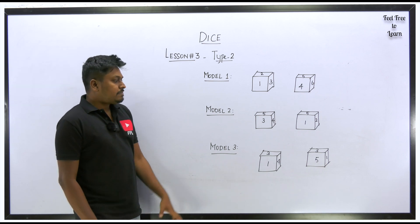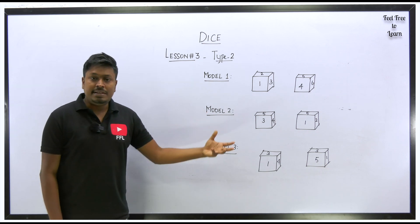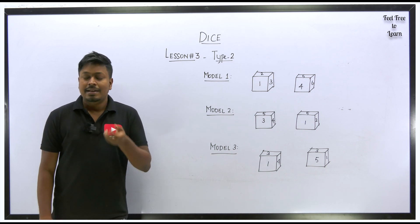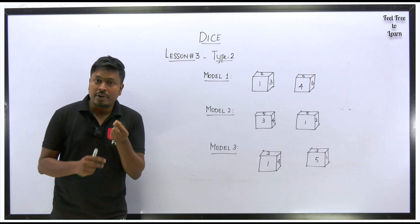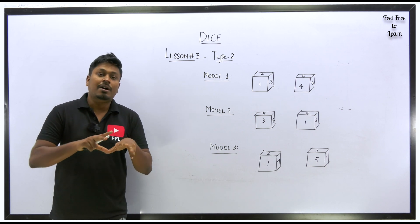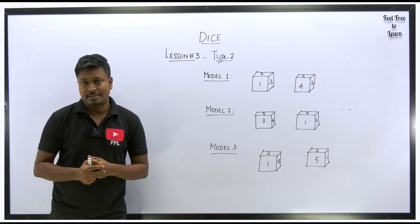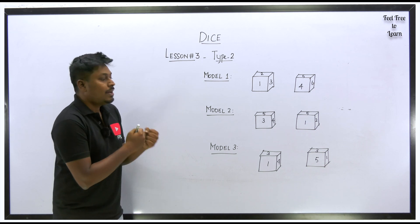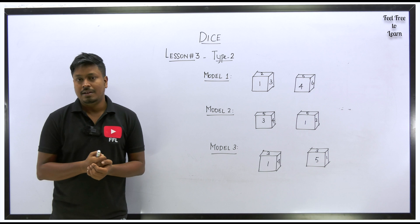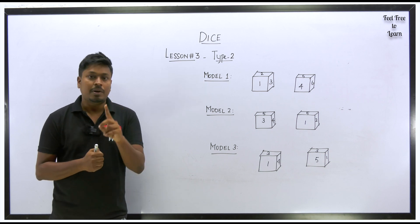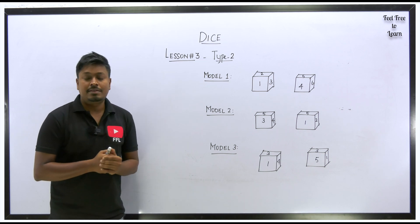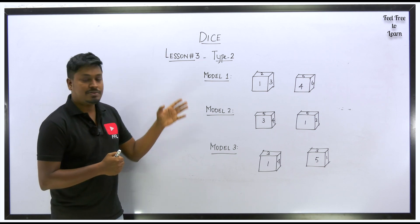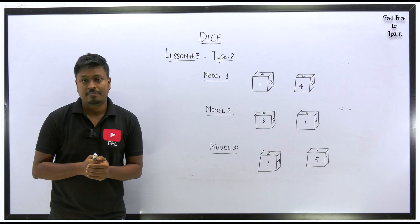I am going to solve all these questions by a normal method as well as by a shortcut technique. This shortcut is common for all the remaining lessons. If you learn it properly, you can apply it across all dice questions. So now let me move on to the questions based on all three models.